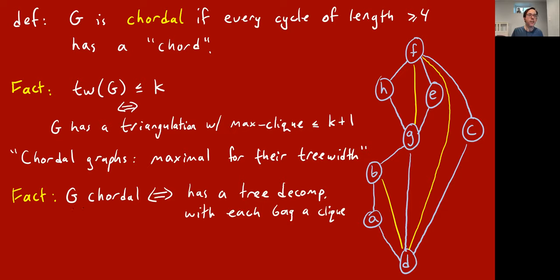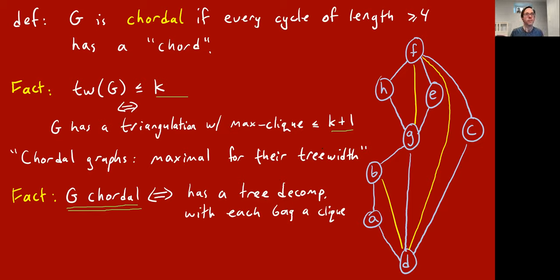Another manifestation: a graph G is chordal if it has a tree decomposition where every bag is itself a clique. If the graph has tree width k, those cliques will have size k plus one, and the minus one in the width formula gives tree width k.